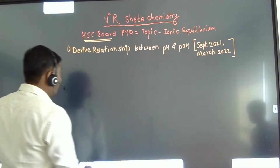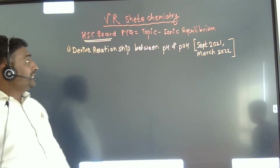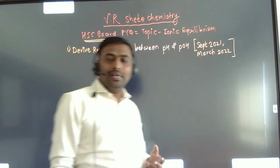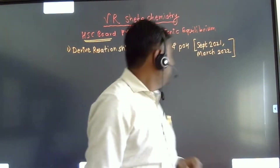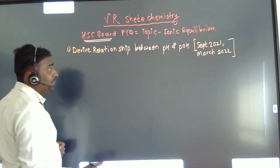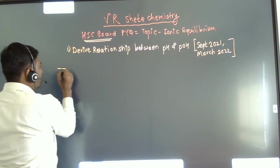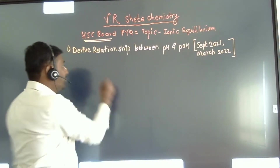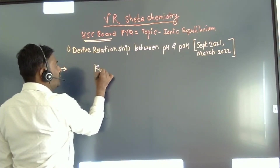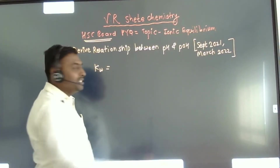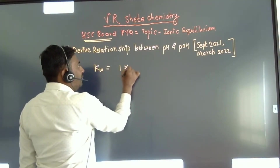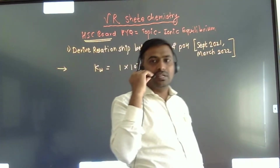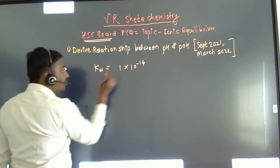The first question we will be discussing is the relationship between pH and pOH. This is a very common question asked in HSC board examinations. As we know, the dissociation constant of water is Kw, and its value is always 1 × 10⁻¹⁴. This is the ionic product of water.